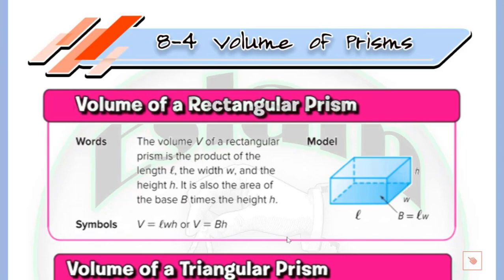Now we need to find the volume. To find the volume of any prism — whether triangular or rectangular — we just multiply the area of the base by the height. For a rectangle, that's length multiplied by width, then multiplied by the height. The height is the length of the line segment joining the two parallel bases.